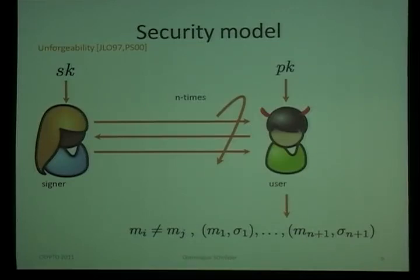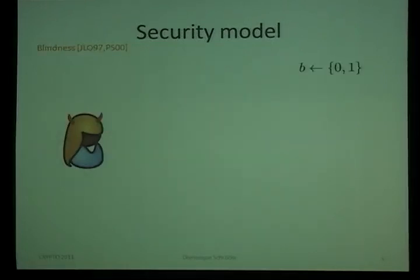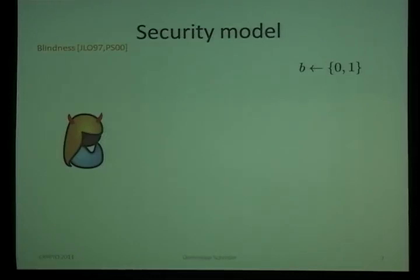The basic idea is that if the user managed to compute one more signature, then at least one should be fresh. Blindness, as mentioned before, says that the signer cannot really see the message he's signing. This is defined in the usual indistinguishability game.